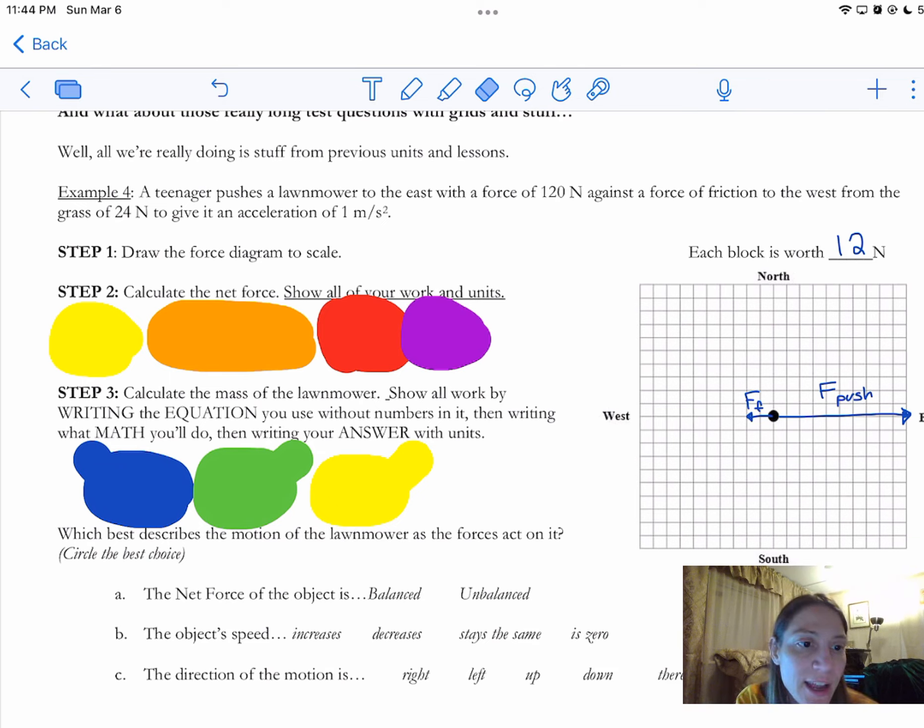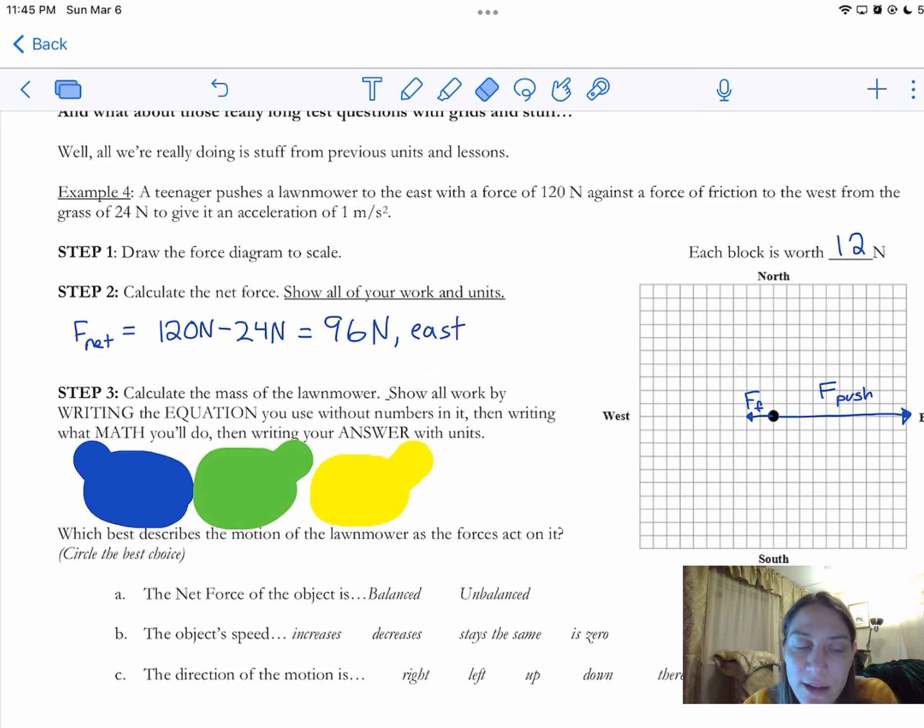The next step says to calculate the net force. Show all of your work and units. There's also a direction that's necessary here. So to find the net force, which I think I inadvertently deleted the F part. There we go. To find the net force, those forces are in opposite directions, which means I'm going to be subtracting them. So I did 120 newtons minus 24 newtons, which gave me 96 newtons. And then when I was trying to figure out what the direction would be, I just went with the bigger arrow, which is pointing to the east. So then I wrote down east.